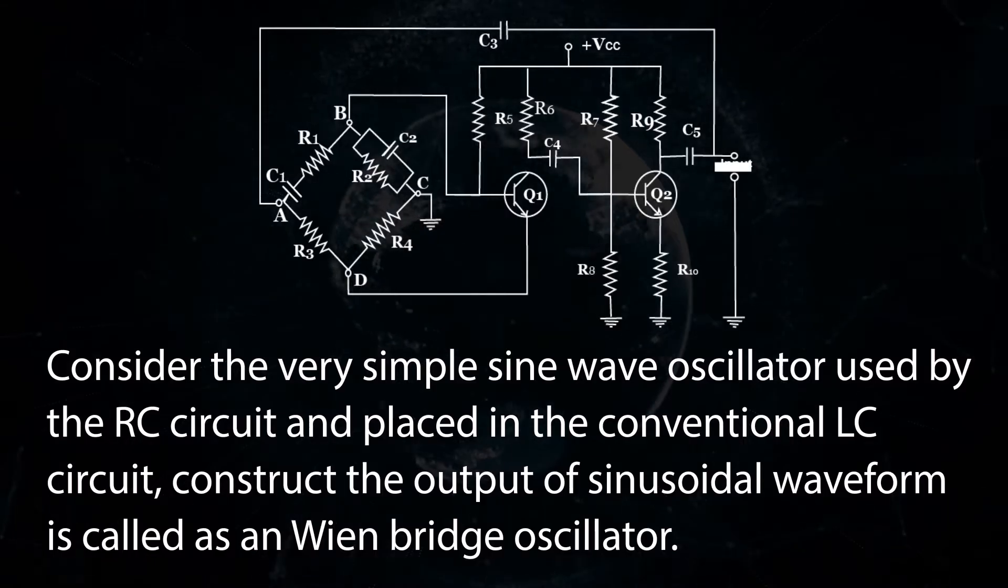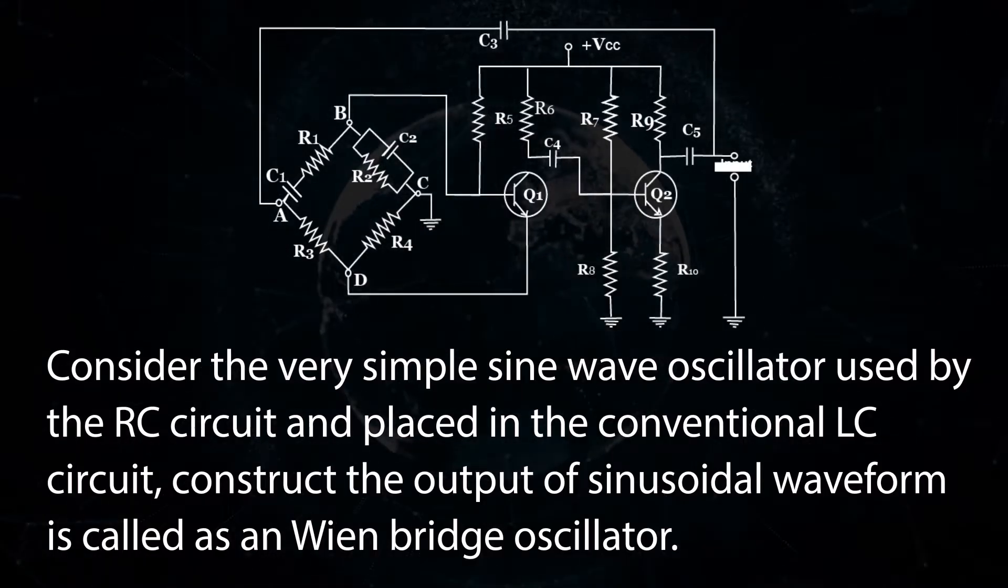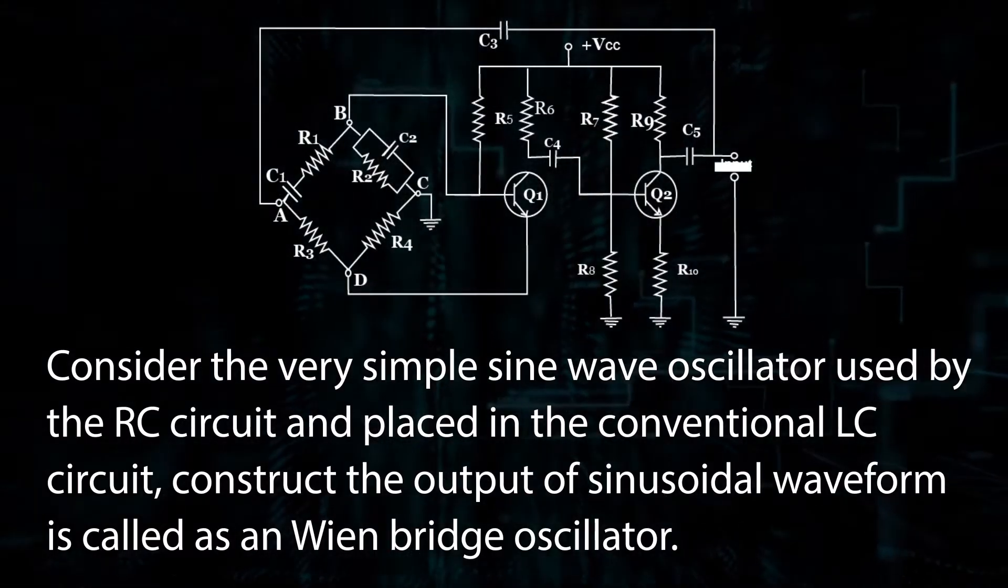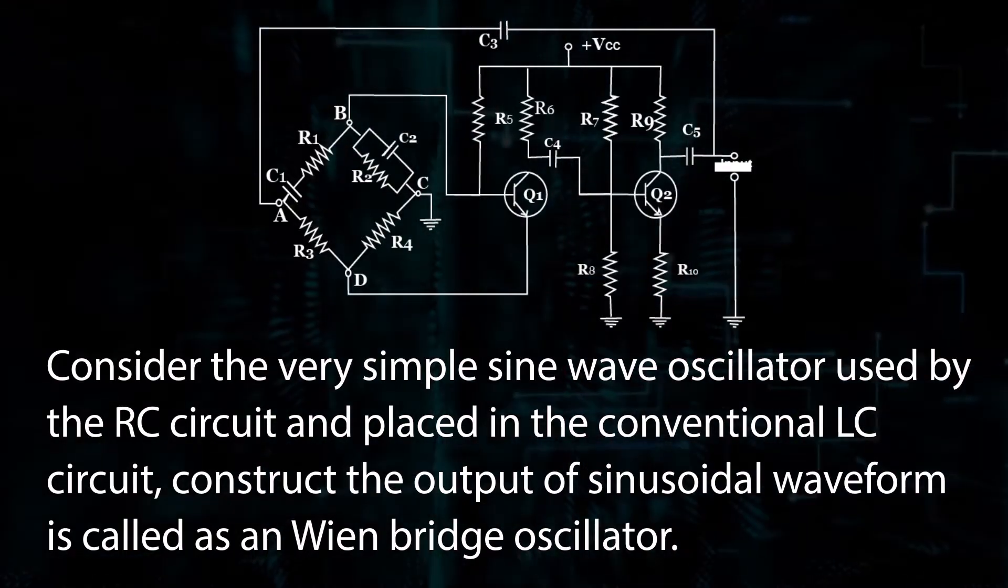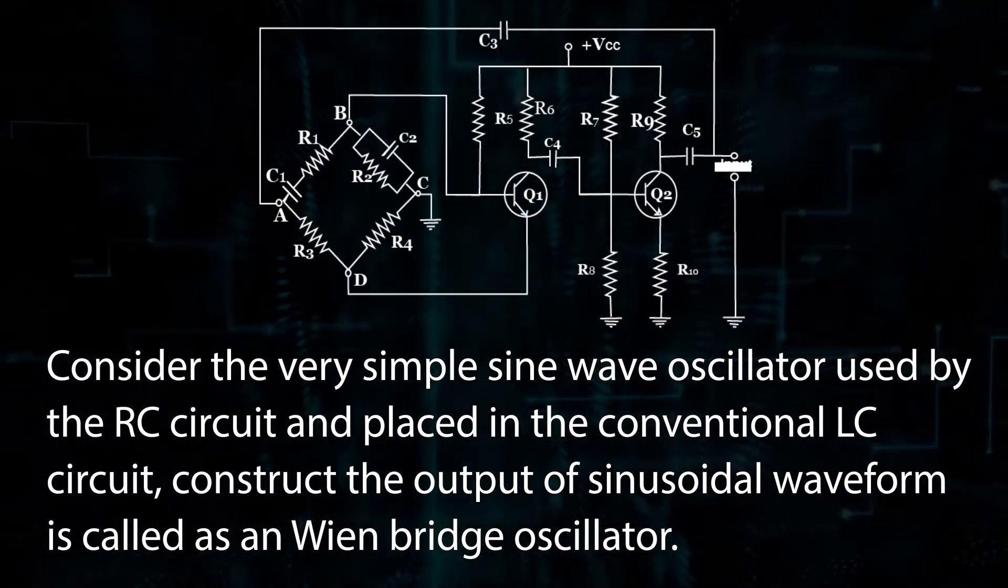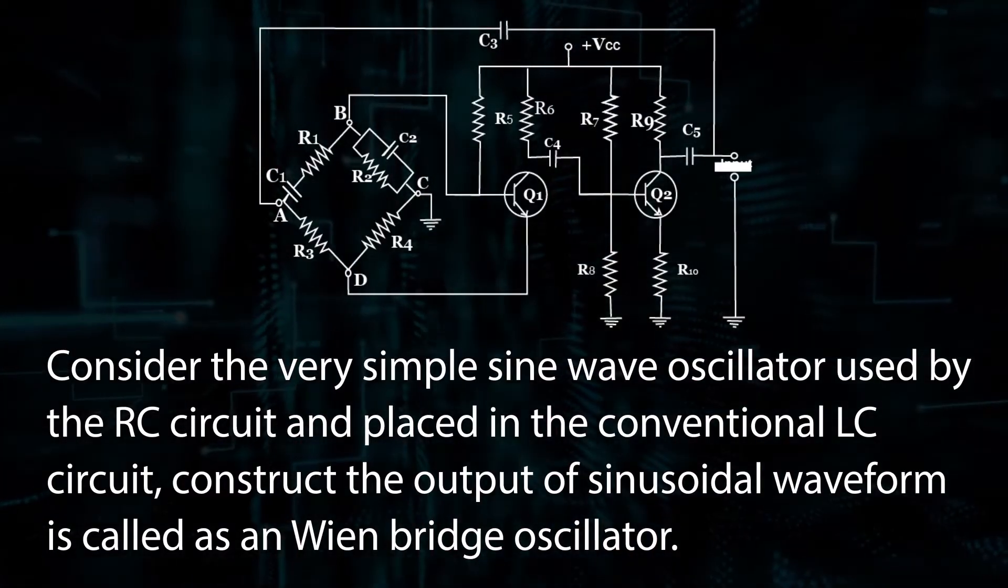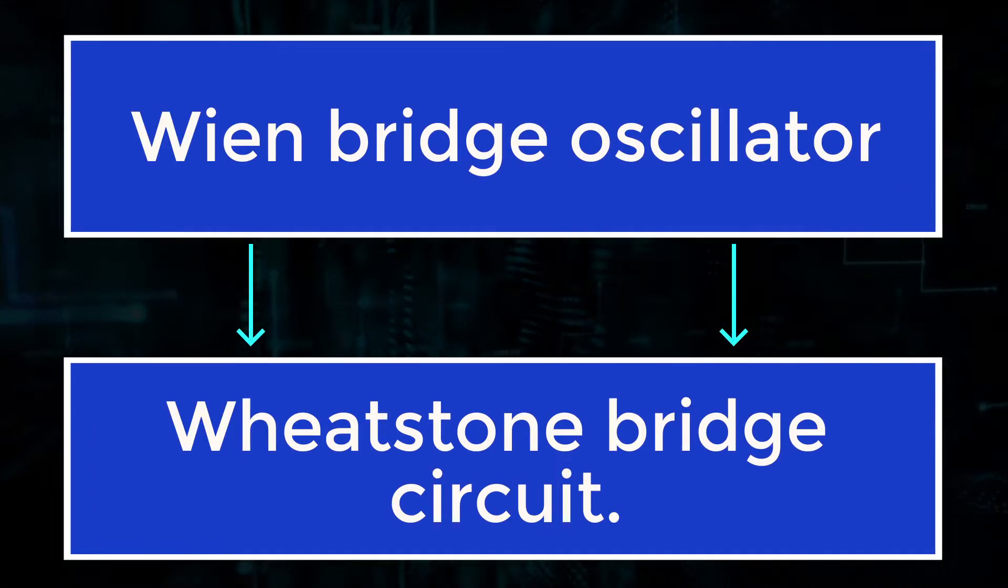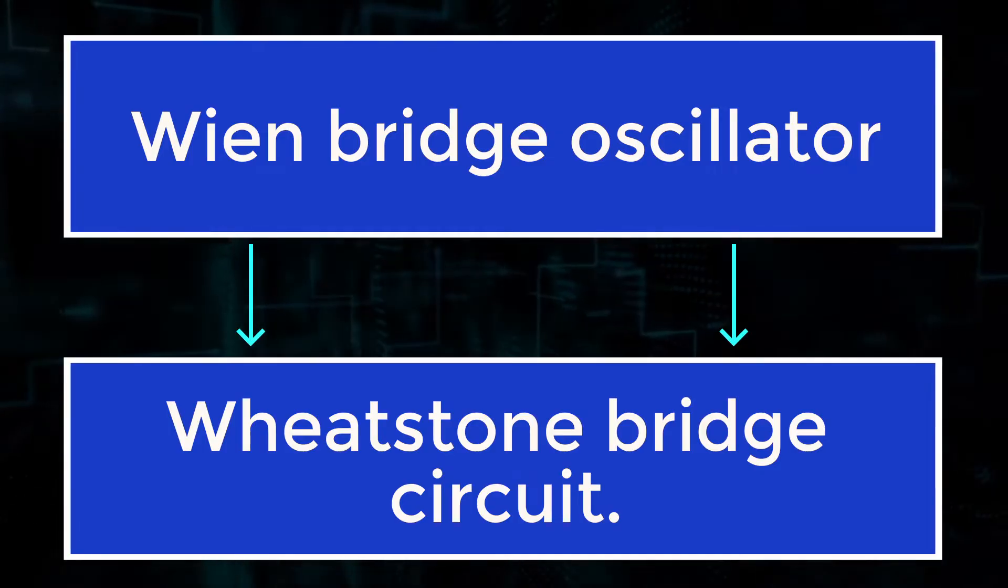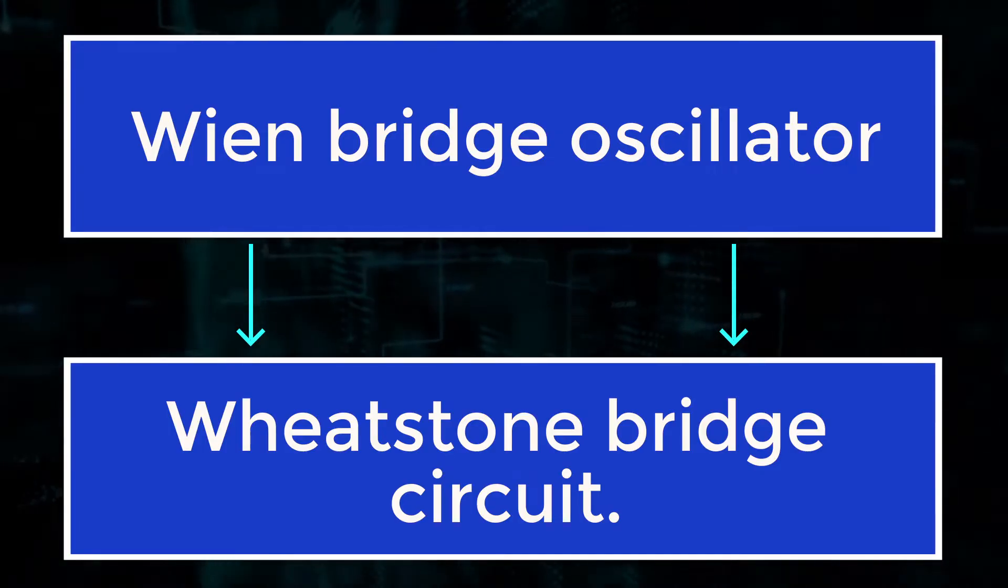Consider the very simple sine wave oscillator used by the RC circuit and placed in the conventional LC circuit. The output of sinusoidal waveform is called a Wein Bridge Oscillator. The Wein Bridge Oscillator is also called the Wheatstone Bridge circuit.